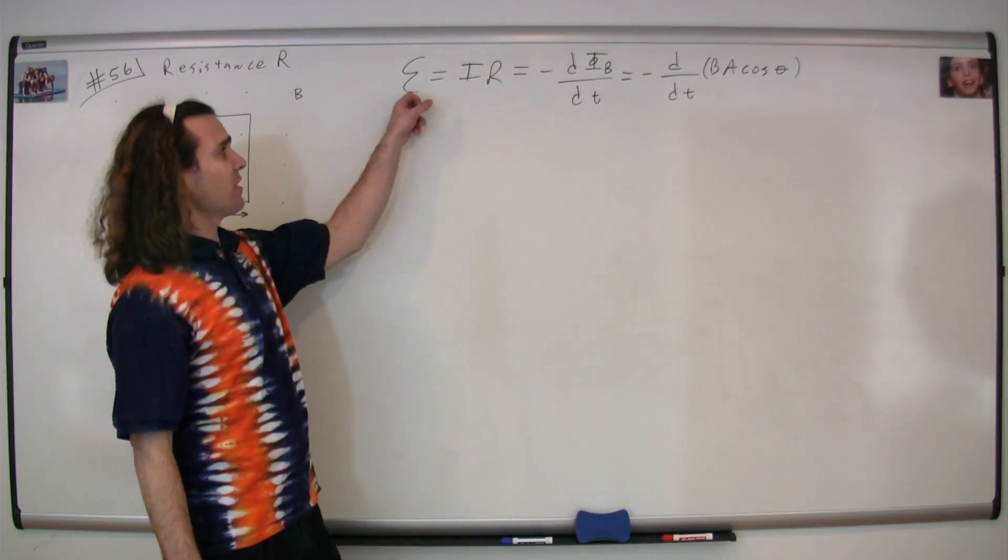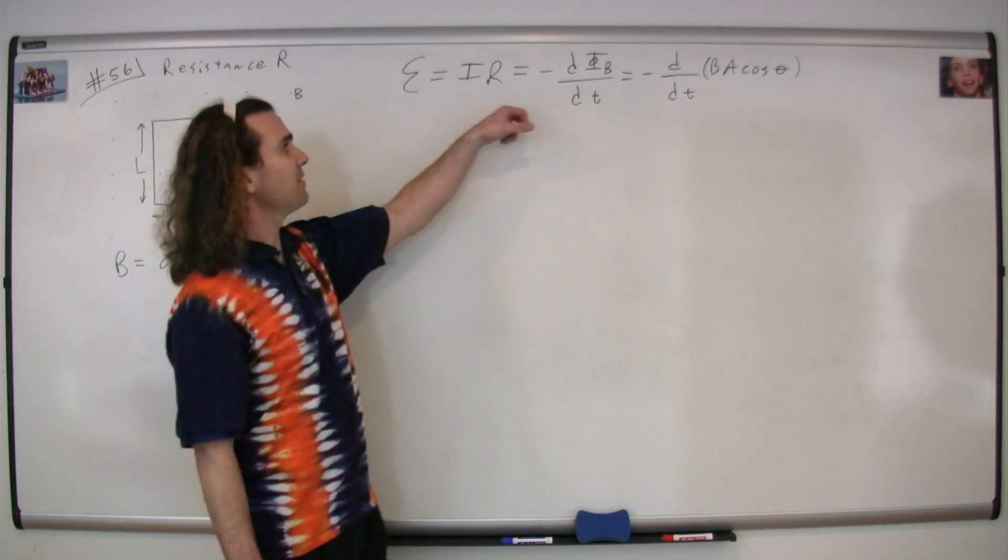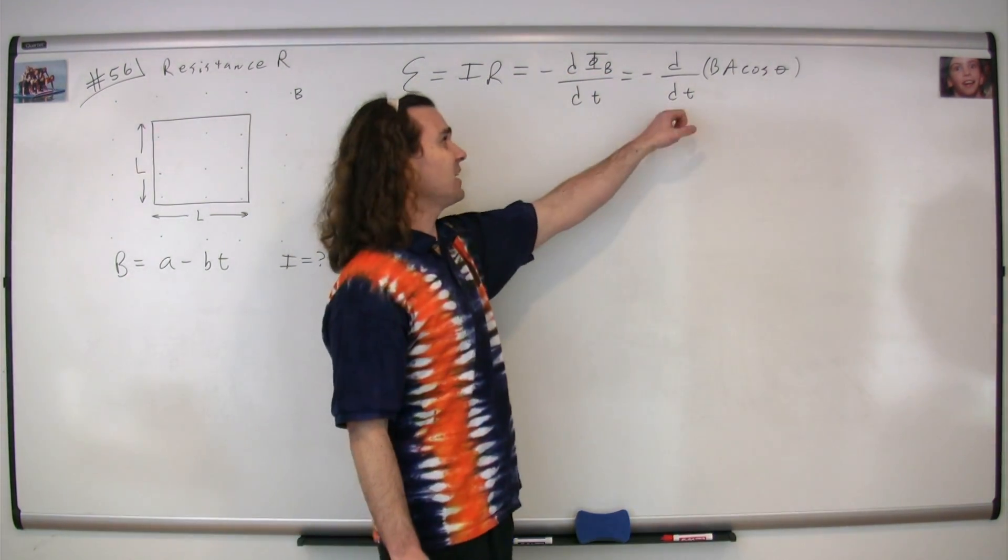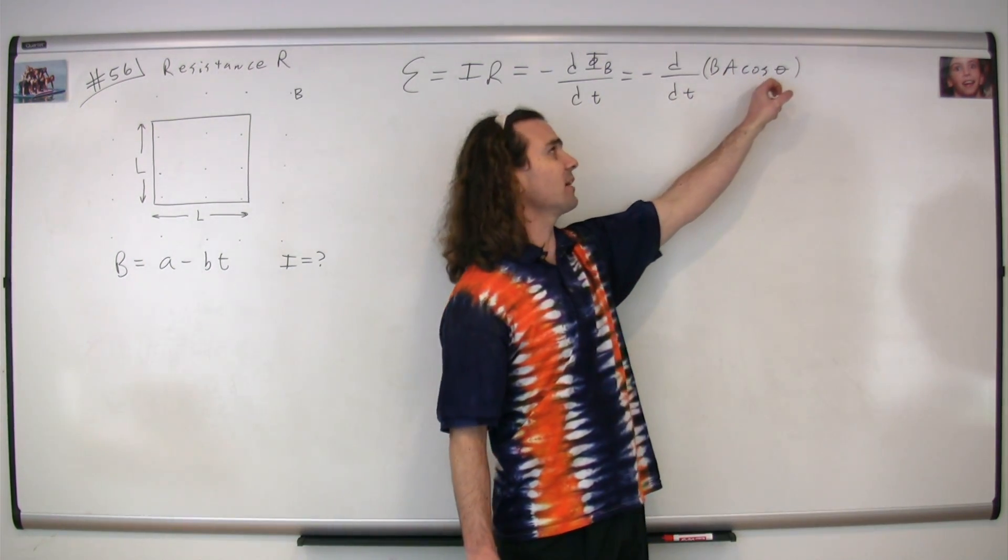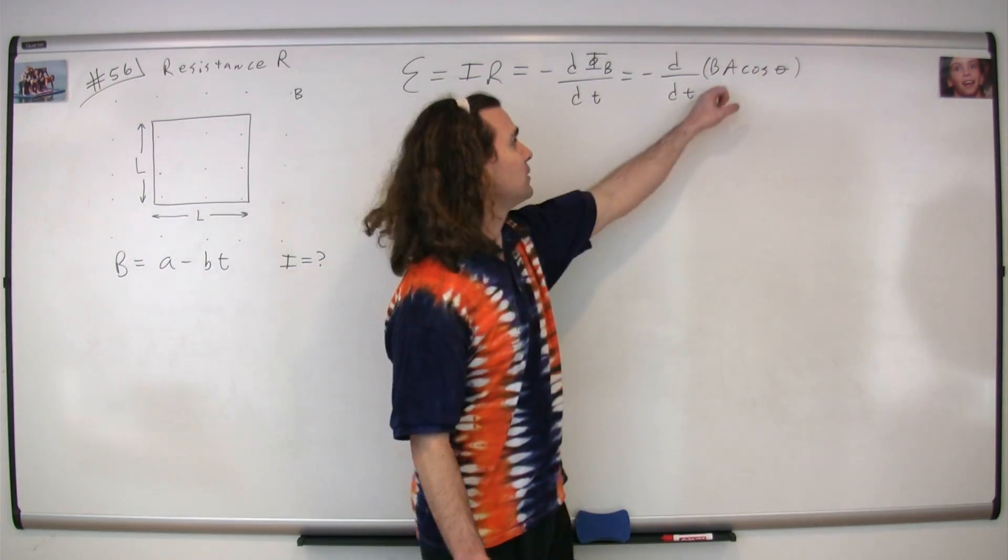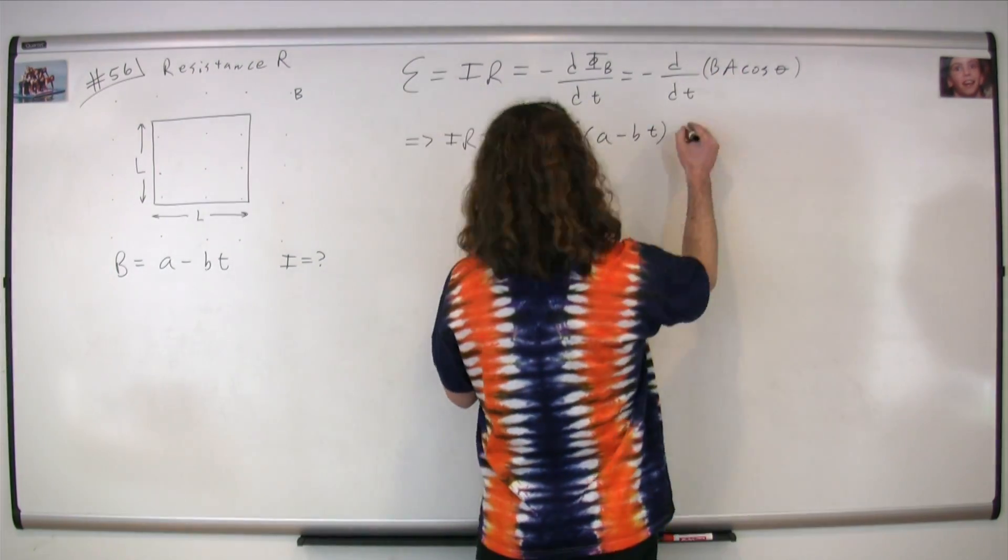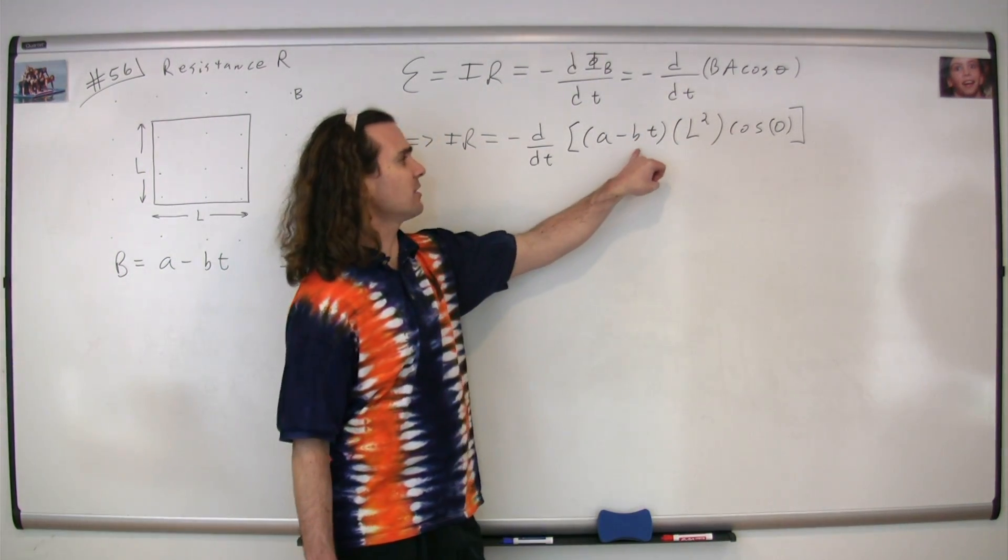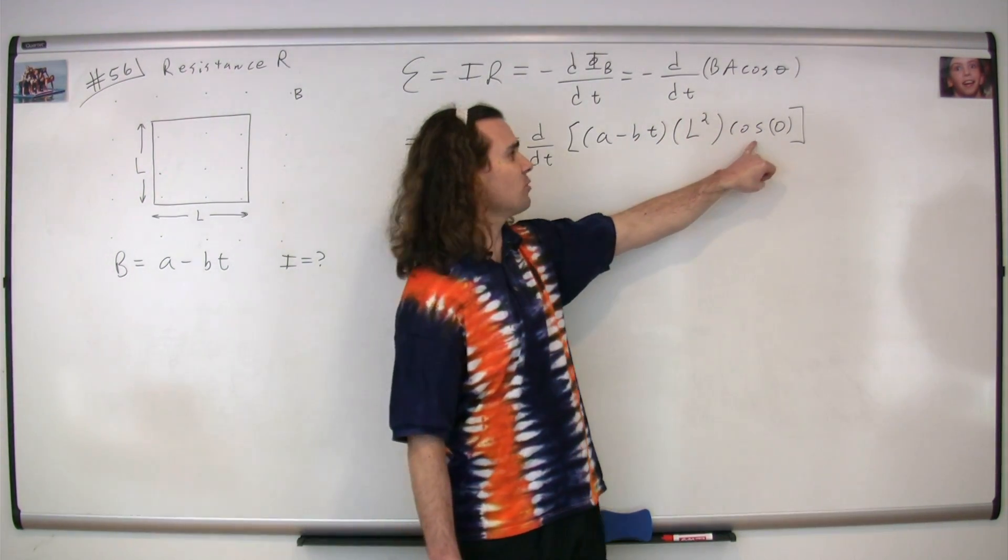We know the electric potential difference equals the current times the resistance, and we also know the induced EMF is equal to the negative derivative of magnetic flux as a function of time, or the negative derivative of bA cosine theta, the magnetic field times the area times the cosine of the angle between the magnetic field and the area vector. We plug in the equation for the magnetic field, which is little a minus little b times t, times the area, which is capital L squared, times the cosine of theta.